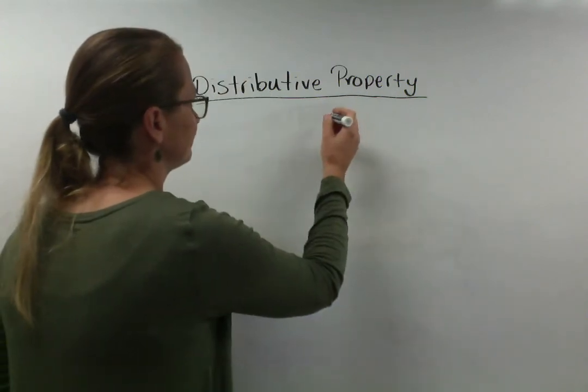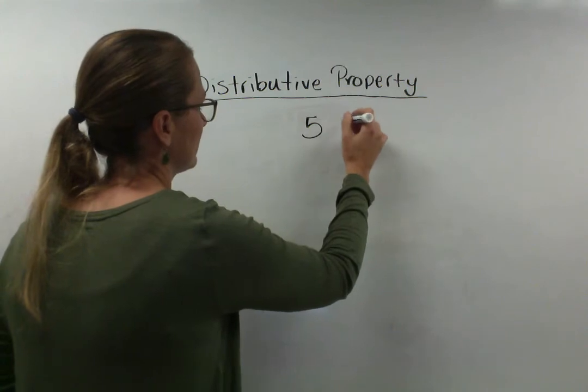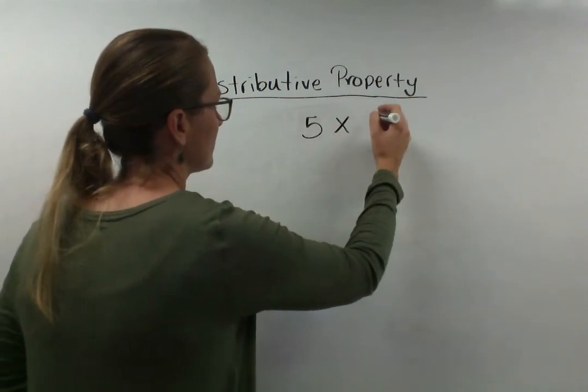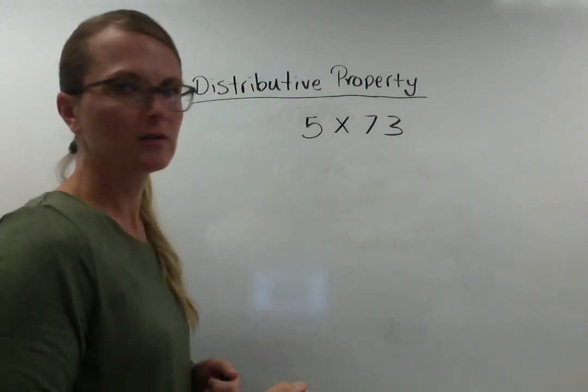Let's do, I don't know, 5. 5s are fun. 5 times 73. Because that sounds like a hard one. Okay? Well, it is hard.